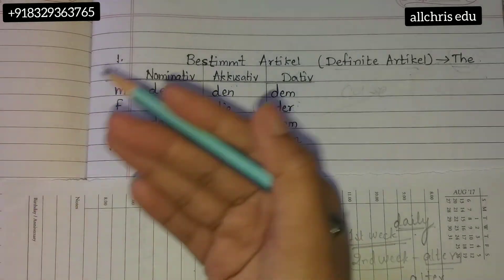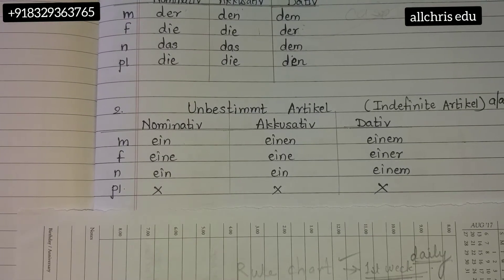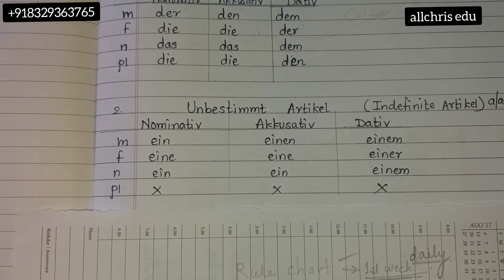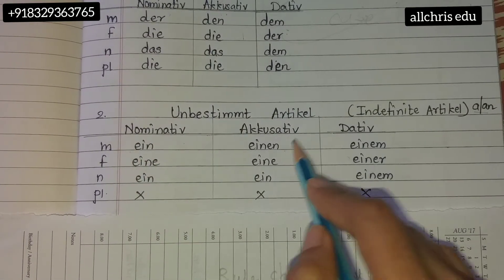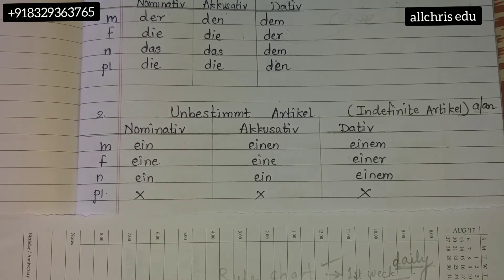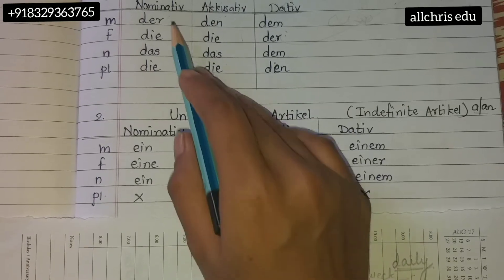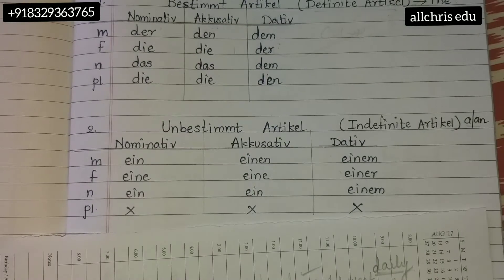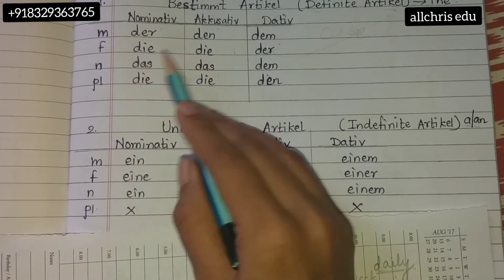Number two is the unbestimmter Artikel — indefinite article — chart. This is like 'a' and 'an' in English. It also has three columns: nominative, accusative, and dative. Don't just copy-paste — I'll give you some tricks. In the bestimmter Artikel, just learn the nominative column by heart; the next two columns can be handled with tricks.